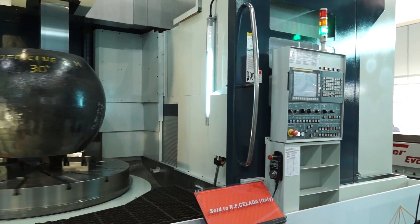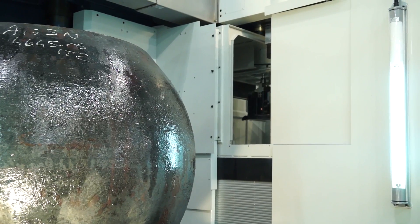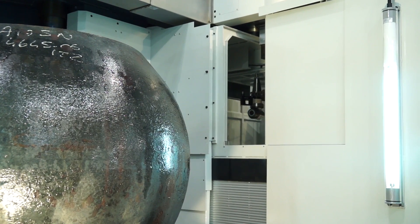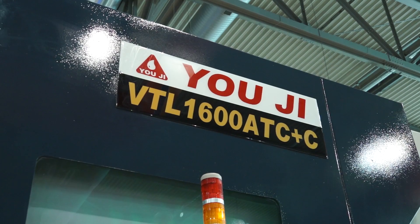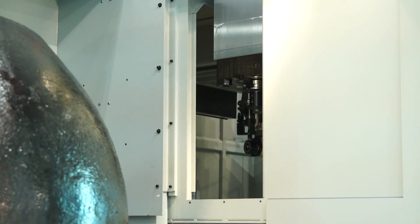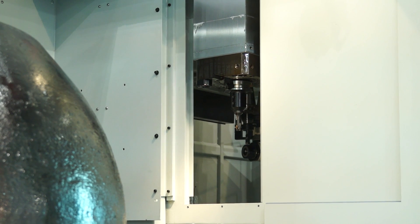With the tool changer we've actually got 16 tools in an ATC which are all BT50 or got a BT50 back end. So again that demonstrates what this machine is trying to achieve, not just on turning but on milling as well.